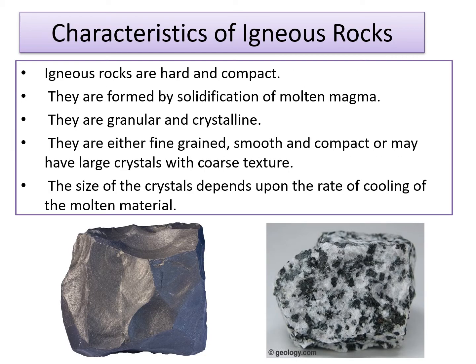Now we will study the characteristics of igneous rocks. Igneous rocks are hard and compact. They are formed by solidification of molten magma. They are granular and crystalline. They are either fine-grained, smooth and compact, or may have large crystals with coarse texture. The size of the crystals depends upon the rate of cooling of the molten material. If the molten material cools very rapidly, the crystals formed will be small. But if the rate of cooling is very slow, the crystals formed will be large.